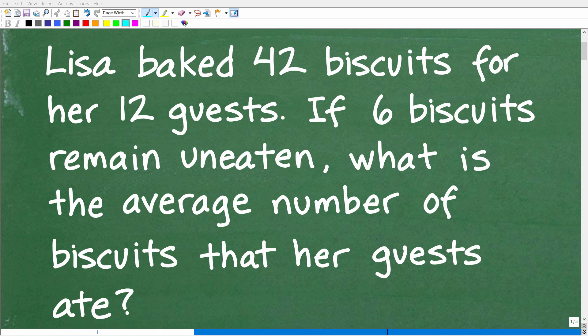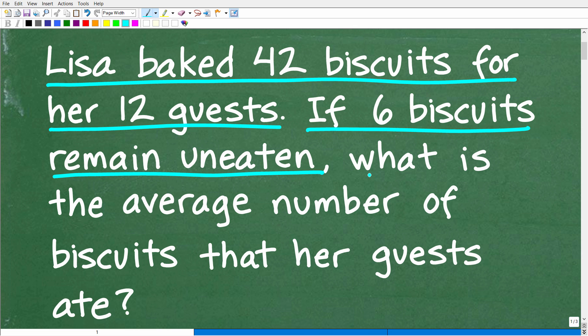Okay, so get ready to put your math skills to work to solve this interesting little math word problem. Matter of fact, let me go ahead and read the problem. It is as follows: Lisa baked 42 biscuits for her 12 guests. If six biscuits remain uneaten, what is the average number of biscuits that her guests ate?